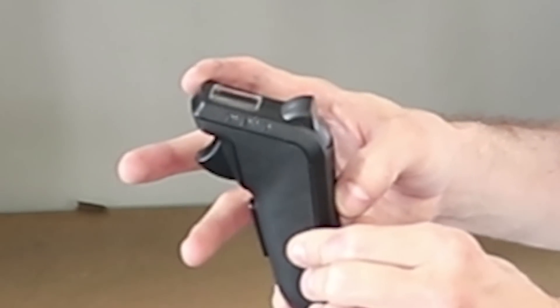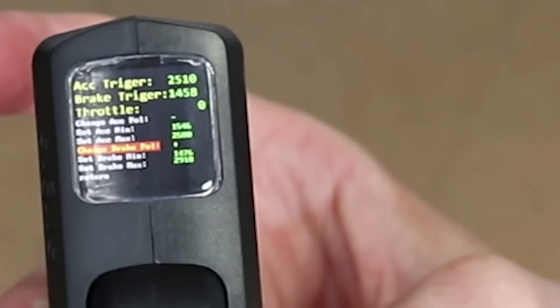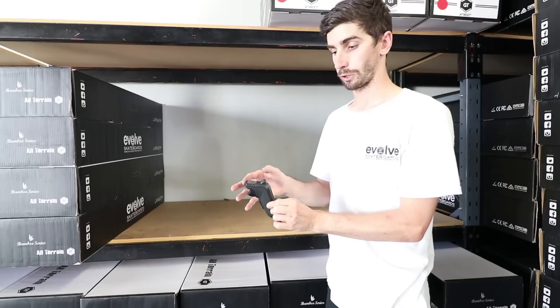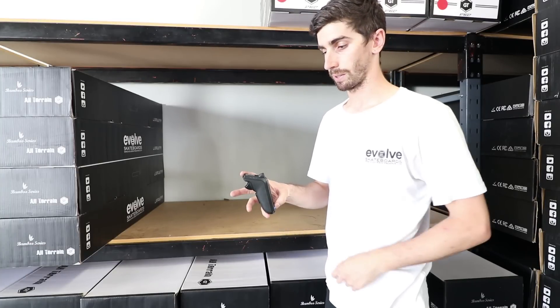Then we want to scroll down to set brake minimum. We want to ensure the brake lever is completely let go. Press the power button to set.